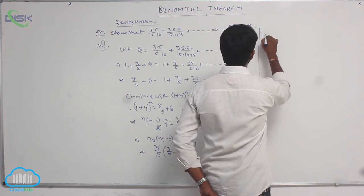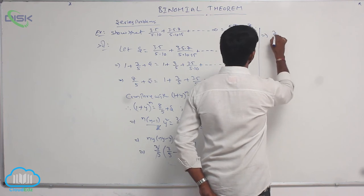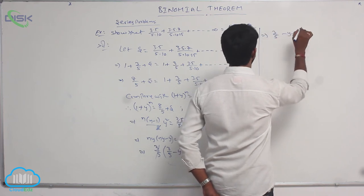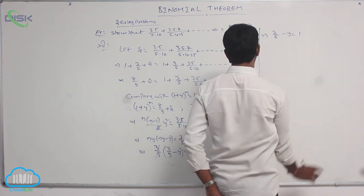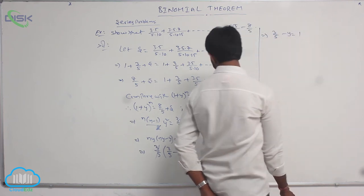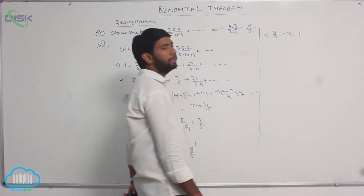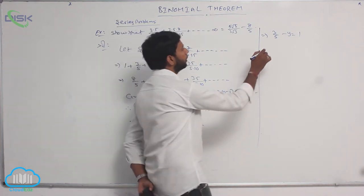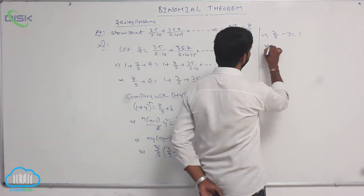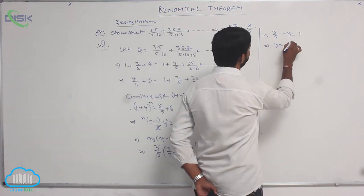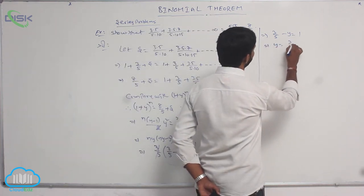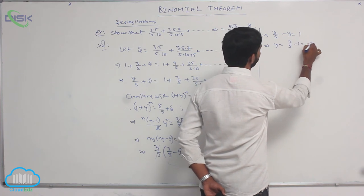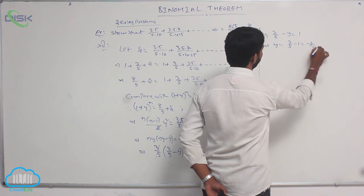That implies 3/5 - y = 1, which gives y = 3/5 - 1 = -2/5.